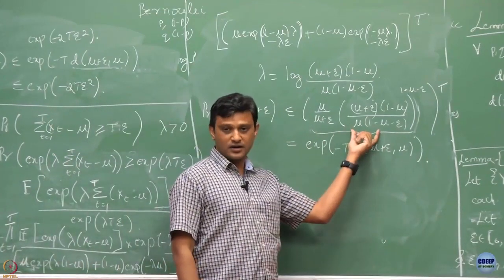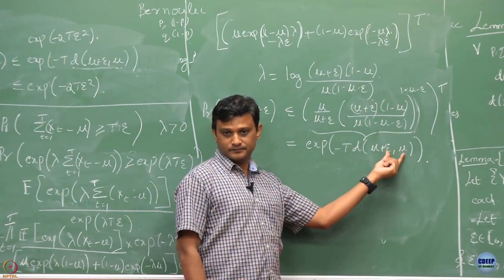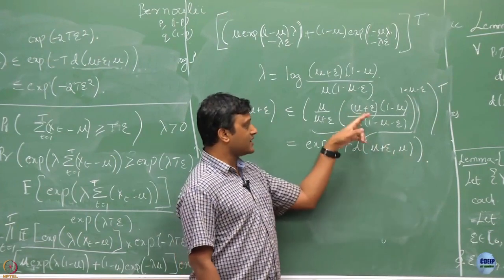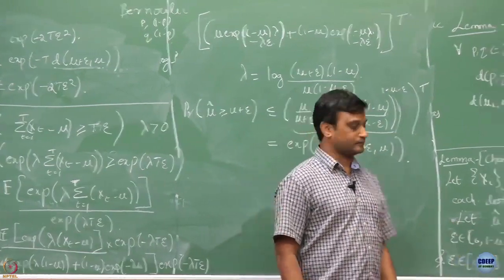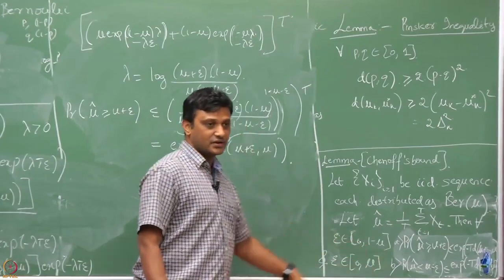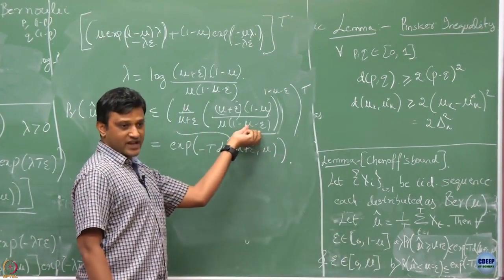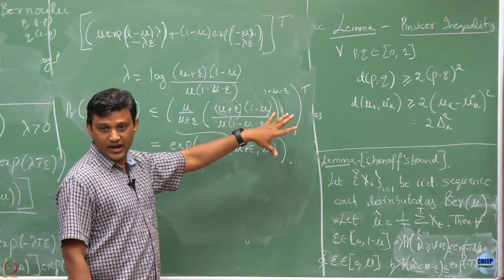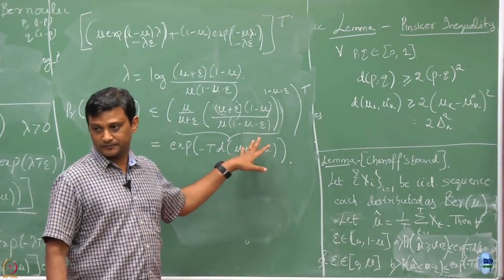So whatever bound we have, we can manipulate and write it as the KL divergence between mu plus epsilon and mu. You can verify using the formula for KL divergence that it can be expressed in this form. Similarly, for the case where epsilon is between 0 and mu, one can show a matching lower-tail bound in the same way.